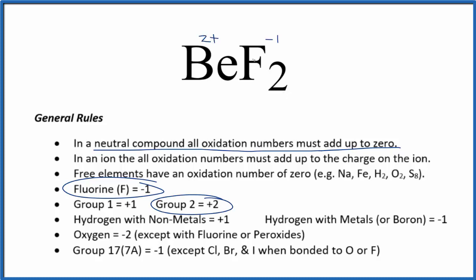So we have two fluorine atoms, each one's minus one, so that's two minus and two plus. That adds up to zero. So in a neutral compound, all the oxidation numbers must add up to zero.